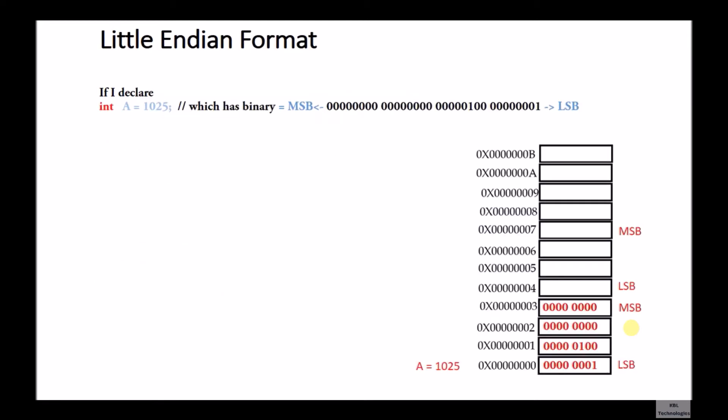Let's see what the Endian formats are. First, we have taken the example of Little Endian format. We have declared an integer: a equals 1025, which has the binary number as shown in the picture. If we assign memory location 0 to 3 to that integer, then in the Little Endian format the LSB is stored at the lower address and the MSB is stored at the higher address. This format is called the Little Endian format.